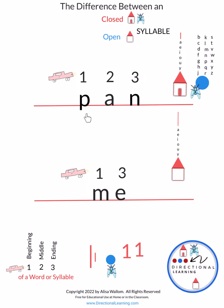Syllables live in words. And in order for this to be a word, it must contain a vowel. So these are our vowels. Can you pick which one the vowel is? This is the vowel.